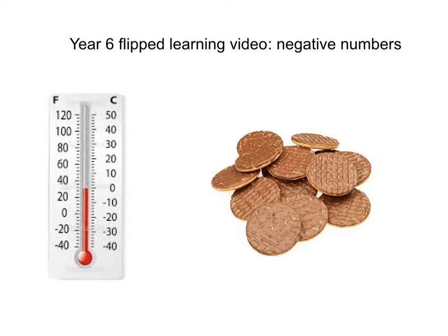However, you could never have a negative number of objects. If I took all those biscuits away and I was left with none, I couldn't have one less. I couldn't have a negative number of biscuits or of objects. When we're talking about negative numbers, we're talking about numbers that you could maybe measure on a scale.